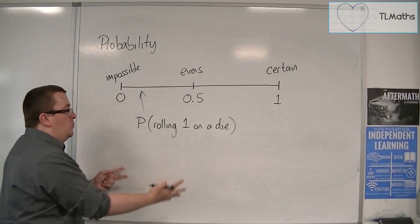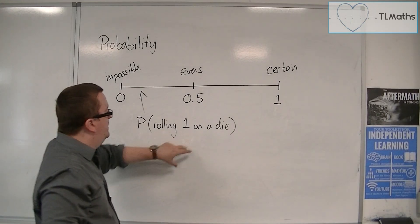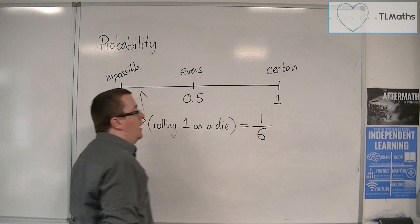The probability of rolling 1 on a die - we can put a capital P with the event in brackets - we can say is 1 in 6, one-sixth.